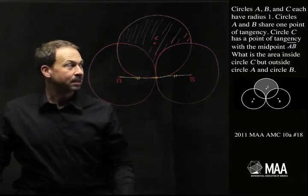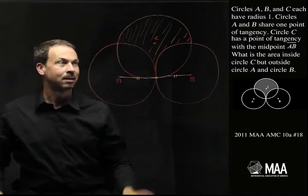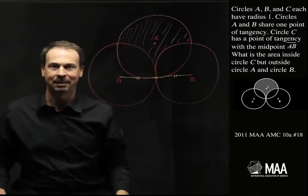The actual question is, what is the area inside circle C, but outside circles A and B? Right, the area of this shaded part, the strange looking piece here.